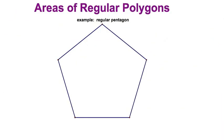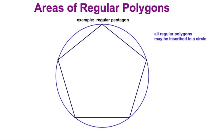Well, here we go. We're going to explore regular polygons and we'll start with an example of a pentagon and let's review a few things that we already know. First off, all these regular polygons may be inscribed in a circle. Now, we learned this in a previous section of the course.